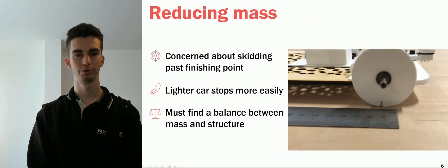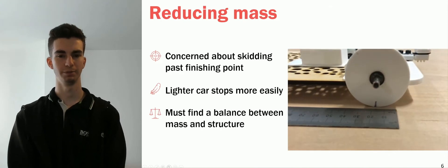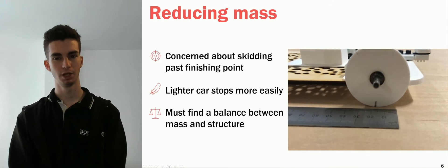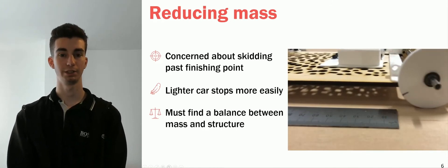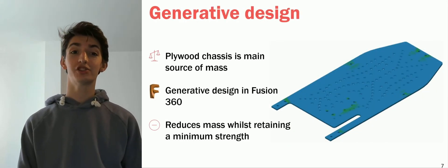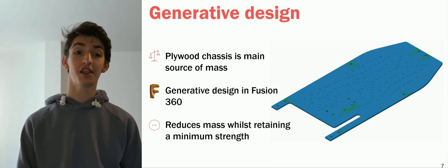There was a concern that the momentum of the car would cause it to skid and overshoot the target point after the motor had been switched off. To mitigate this, we looked to save weight when possible. However, there were some parts of the design where we had to balance the positives and negatives of weight saving. An example of this is the chassis, where we used generative design to reduce its mass without sacrificing stiffness.